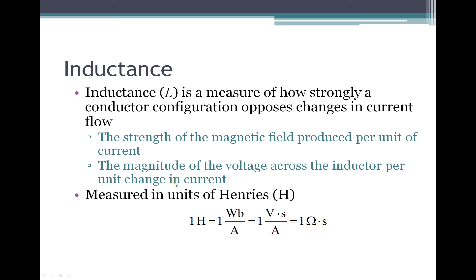Inductance is measured in units called Henrys. Henrys measure the strength of the magnetic field — in Webers — per unit current, or per amp. We also know that a Weber is the same thing as a volt times a second, so we can use this to reduce the equivalence of a Henry into an ohm times a second. All of these units are equivalent to each other, and we will be using these in the future.